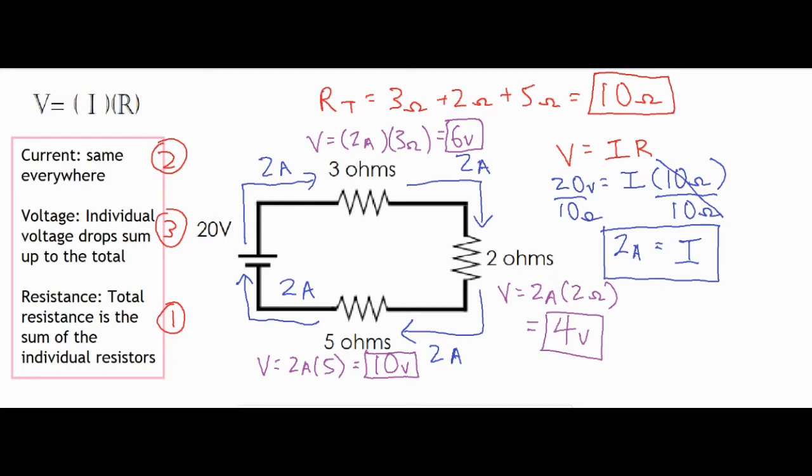Now my numbers did work out pretty cleanly, but sometimes if you're using fractions or decimals and you do a little bit of rounding, you might sum up your three voltages and it might come out slightly above or below your total voltage value. So if you did some rounding, which is okay, you will have some variance there.